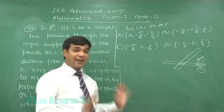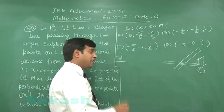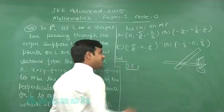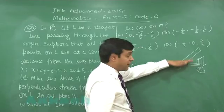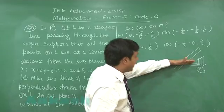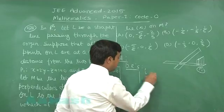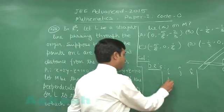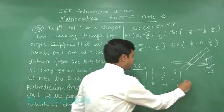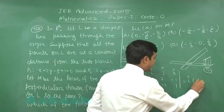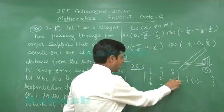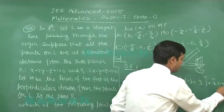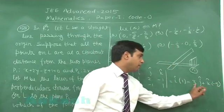After this analysis we can start solving. First, let us find the direction ratios of the required line L. Since it is parallel to the line of intersection of the two planes, the direction ratios are found using the cross product. The normals to the planes are (1, 2, −1) and (2, −1, 1). Computing i(2−1) − j(1+2) + k(−1−4), we get direction ratios 1, −3, −5.